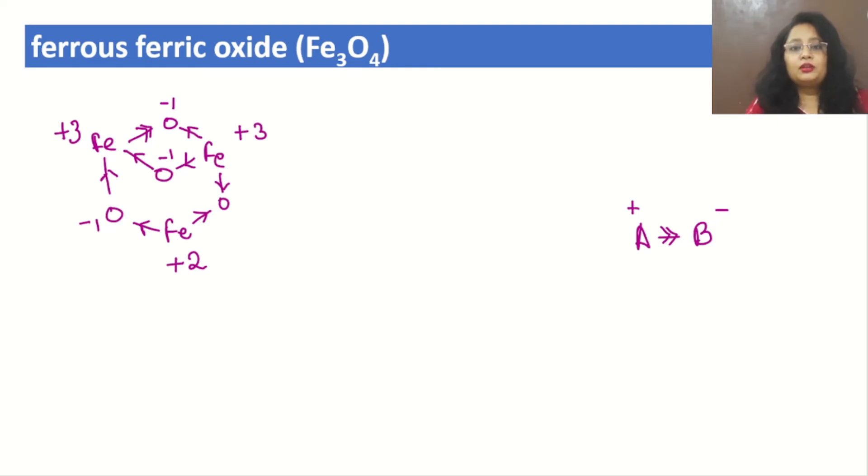So we can say in Fe₃O₄, two of the iron are acquiring +3 charge and one iron is acquiring +2 charge, and oxygen in the same way, each oxygen is having -2 charge.